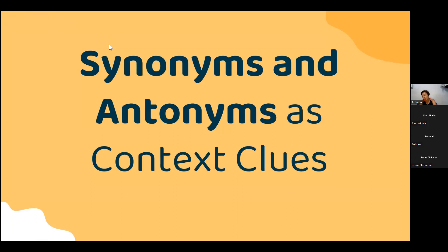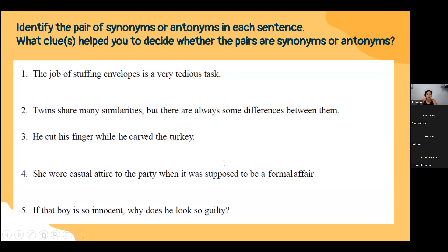Now we're going to practice identifying antonyms and synonyms as context clues. For each example, identify the pair of words — are they synonyms or antonyms? — and identify the signal word or clue that tells you which they are.